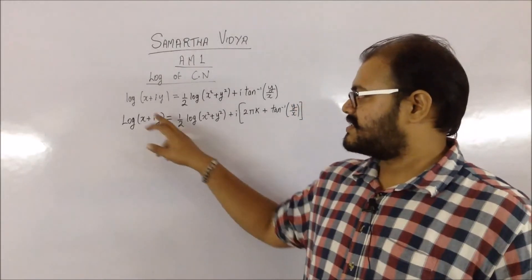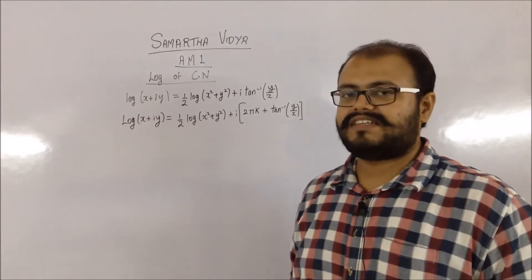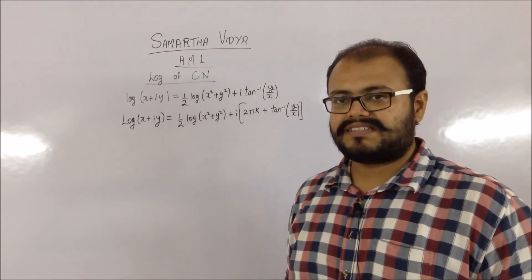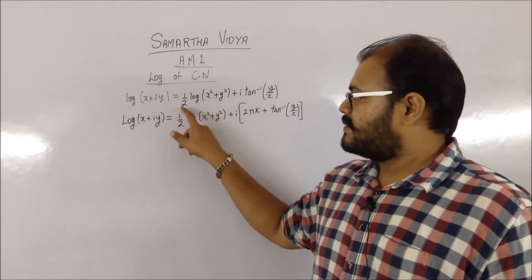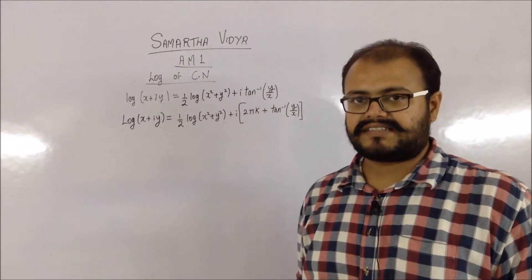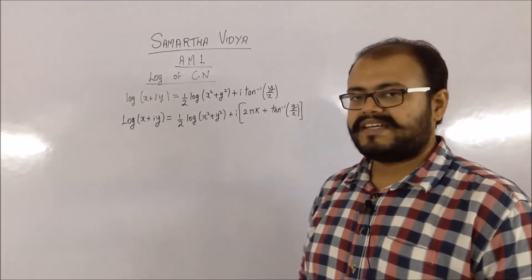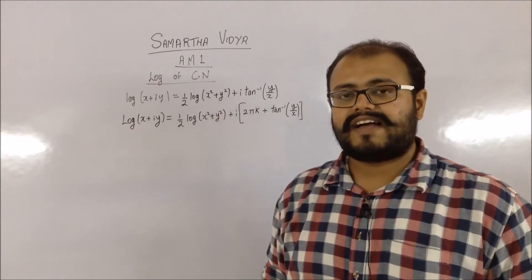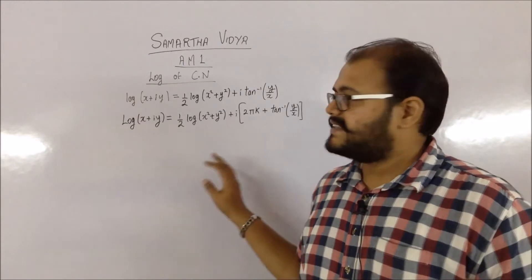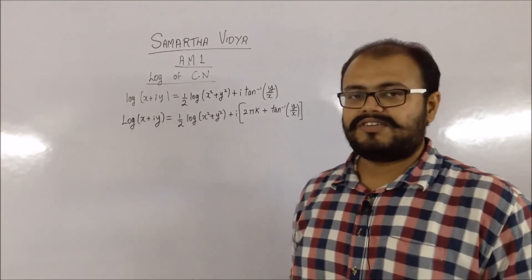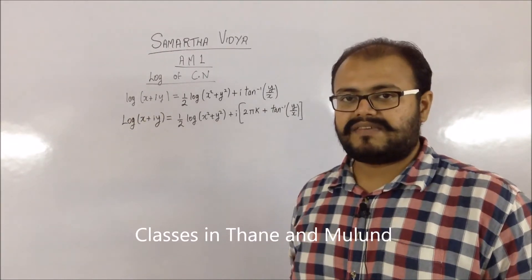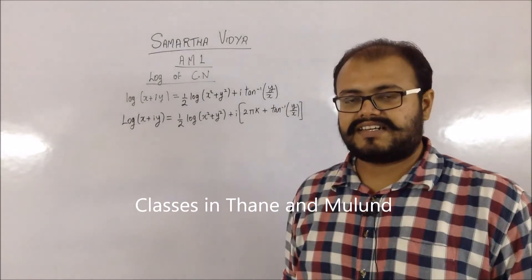The first formula uses a lowercase 'log' of x + iy, which equals half of log(x² + y²) plus i·tan⁻¹(y/x). The value obtained using this first equation is called the principal value. In the second equation, you will notice the 'L' is a capital letter — that distinction makes a difference.